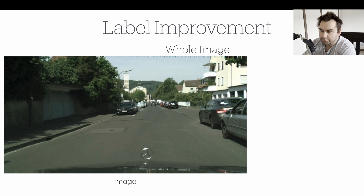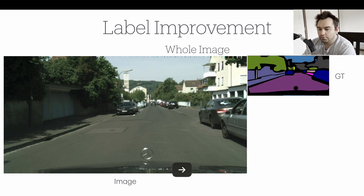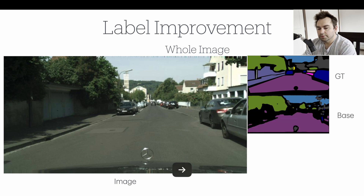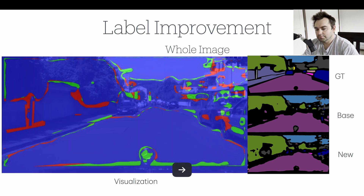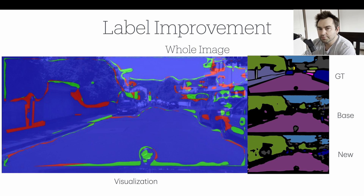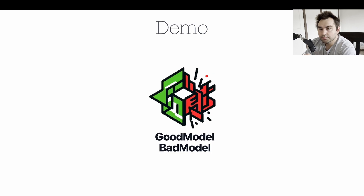Everything in blue means there was no change. Looking at the whole image for label improvement: the base model is doing poorly but does label the road (purple area). The new model is slightly better but not obviously so. The green areas show where the new model is doing better than the old model, while the red areas show where it's doing worse. Now let me show a demo of these visualizations in software I created called Good Model Bad Model.